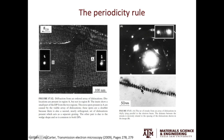Similarly, in the example on the right, you have an array of dislocations, and this periodicity is shown by streakings between two diffraction spots. The distance between the streaks is inversely related to the spacing of those dislocations in real space.